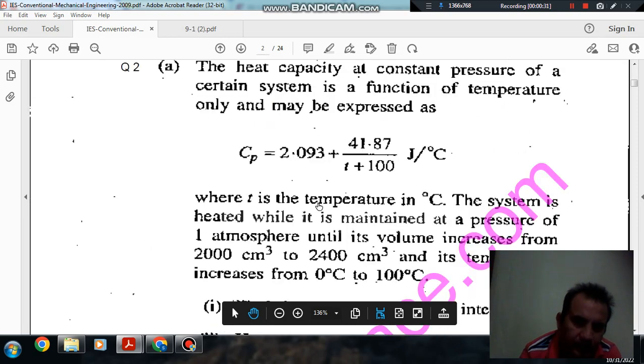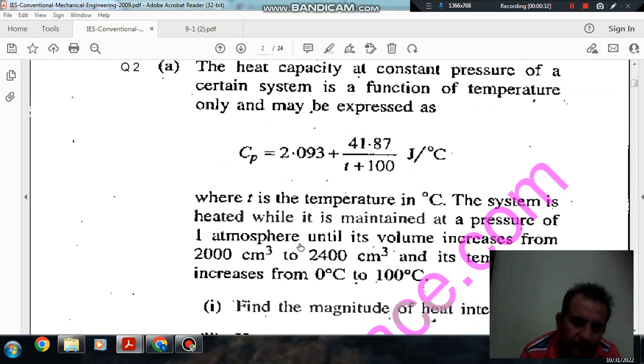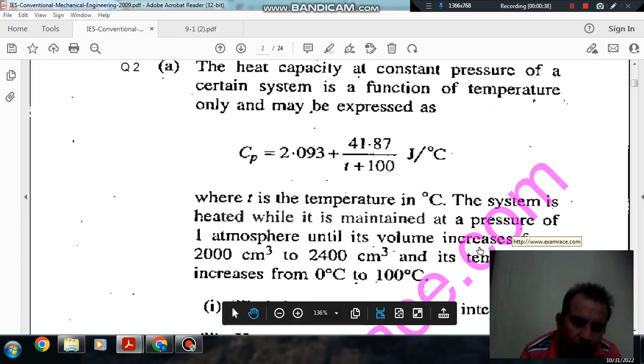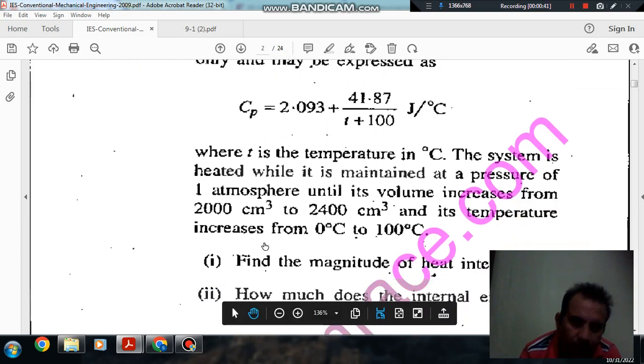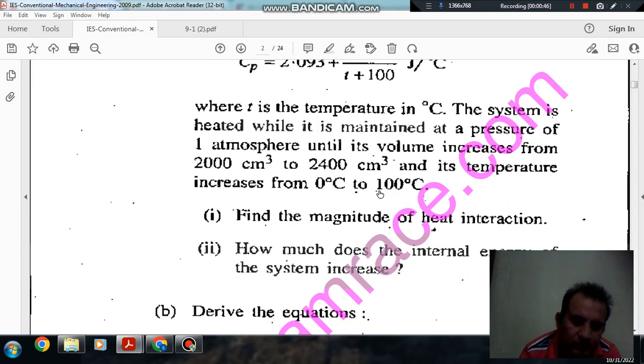Where T is the temperature in degree Celsius. The system is heated while it is maintained at constant pressure of one atmosphere until its volume increases from 2000 cm³ to 2400 cm³ and its temperature increases from 0°C to 100°C.